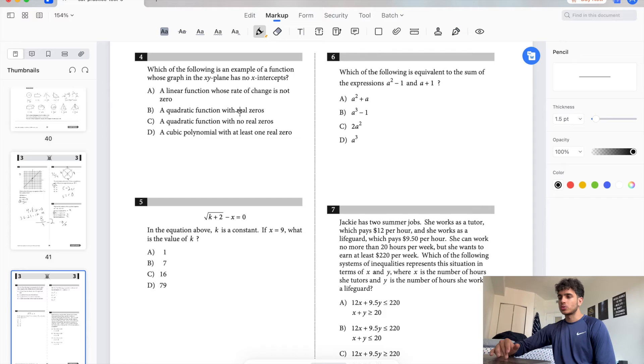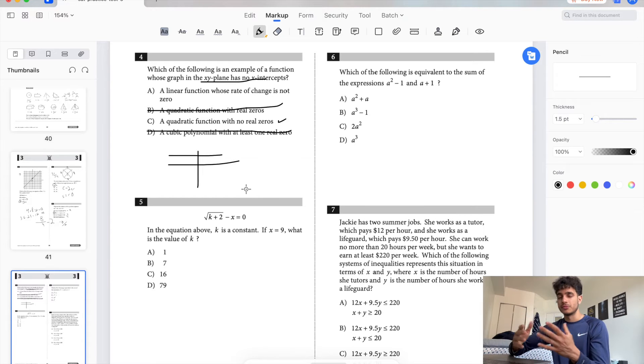Which of the following is an example of a function whose graph in the xy plane has no x-intercepts? No x-intercepts means it never crosses 0, like a horizontal line. A quadratic function with real zeros, that's wrong. A quadratic function with no real zeros, that's potentially correct. A cubic polynomial with at least one zero, that's wrong too, because a zero is the same thing as the x-intercept. A linear function whose rate of change is not 0, that's also wrong. The answer is quadratic with no real zeros. No real solution means it never crossed the x-axis, so like this or that.